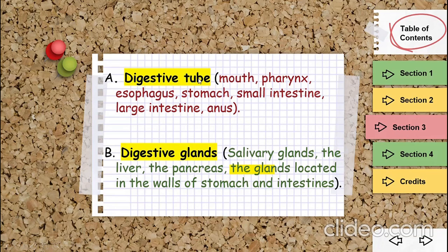The digestive tube starts from the mouth, then the pharynx, esophagus, stomach, small intestine, large intestine, and then the anus. Now we will see the parts on the picture.